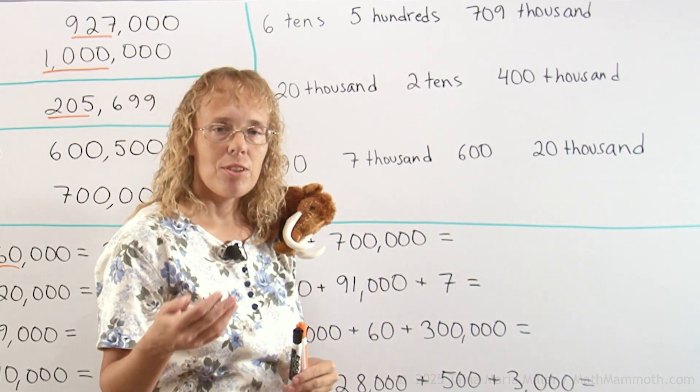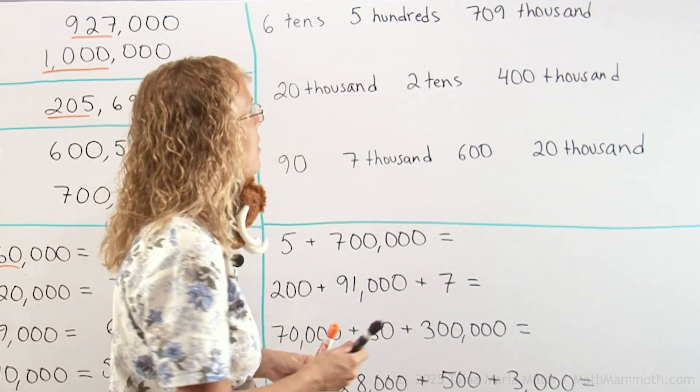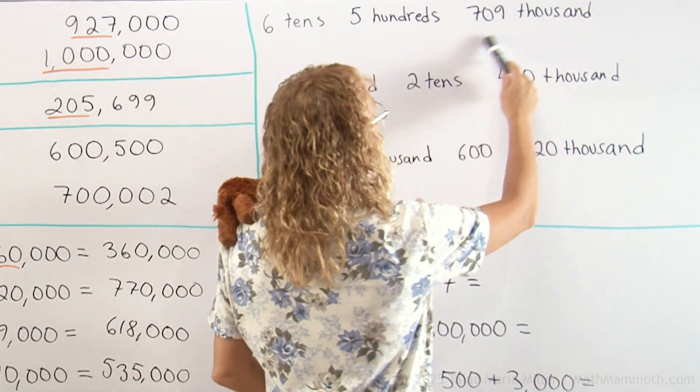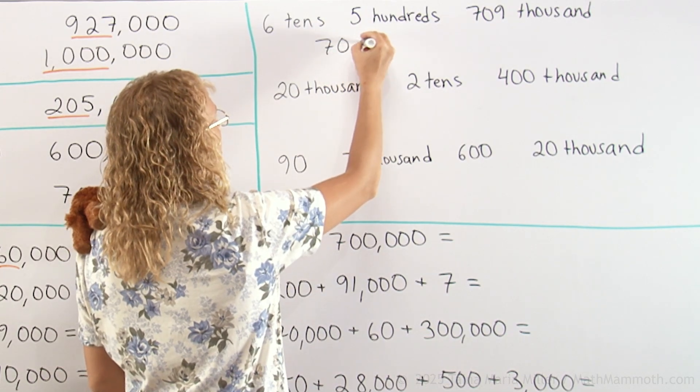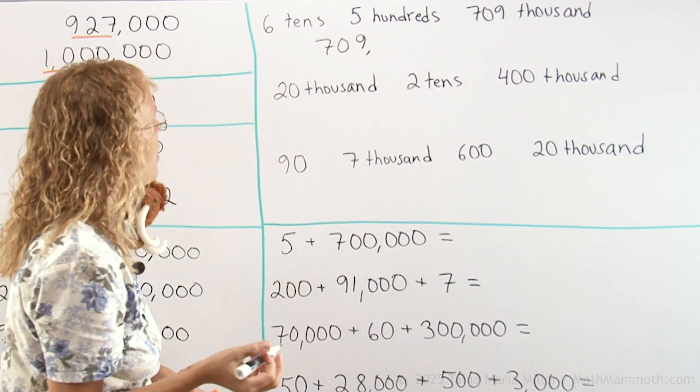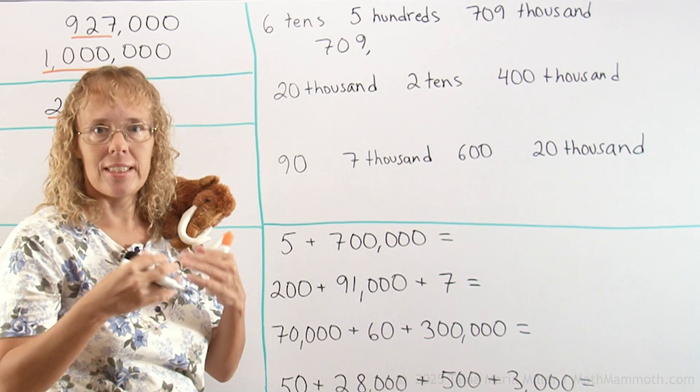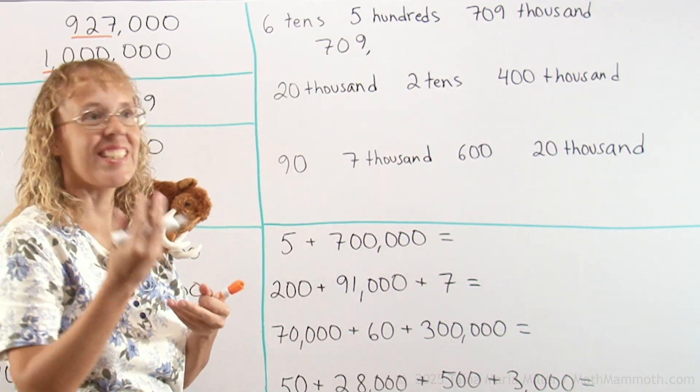I will first find the biggest part, which is the thousands here. Seven-hundred-nine-thousand, so I'll write that, seven-hundred-nine. And my comma, and then the rest of it is five-hundred-and-six-tenths, which is five-hundred-sixty.